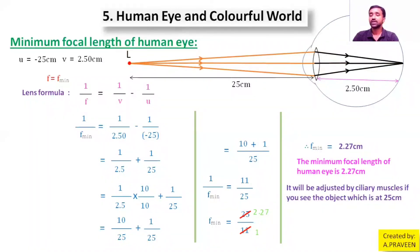The minimum focal length of human eye is 2.27 centimeters. It will be adjusted by ciliary muscles if you see the object which is at 25 centimeter distance from you. Like this we are going to find out minimum focal length of human eye lens. I think this is easy to understand. If you like, please like and comment. Thank you. I'll meet in the next video about how to find out maximum focal length of human eye. Thank you.